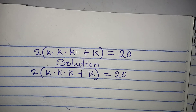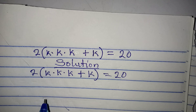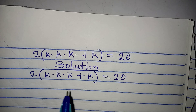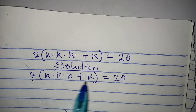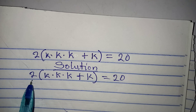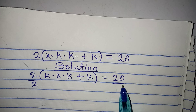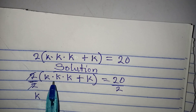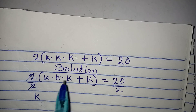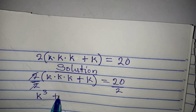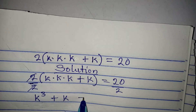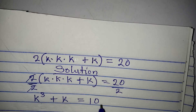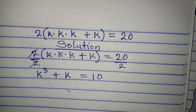This dot here means multiplication. Now, rather than opening the bracket, it is better to divide both sides by 2, since we have 2 here and 2 can divide 20. So divide by 2 on both sides — 2 cancels 2 — and we have k to the power of 3, because k times k times k is k³, then plus k, and this equals 20 over 2, which is 10.